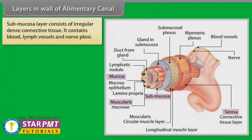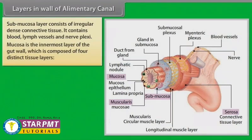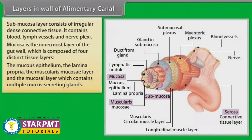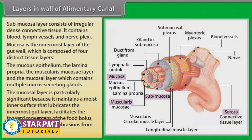The submucosa layer consists of irregular dense connective tissue and contains blood vessels, lymph vessels, and nerve plexuses. The mucosa is the innermost layer of the gut wall, composed of four distinct tissue layers: the mucous epithelium, the lamina propria, the muscularis mucosae, and the mucosal layer containing multiple mucus-secreting glands. This mucosal layer maintains a moist inner surface that lubricates the gut, facilitates movement of the food bolus, and prevents mucosal abrasions from coarse foods.